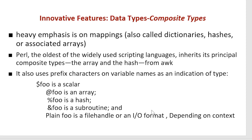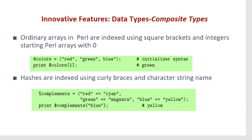In Perl, prefixes indicate the type of variable. The dollar sign means it's a scalar, the at-sign means it's an array, the percentage sign means it's a hash, and the ampersand means it's a subroutine. These six prefix types indicate what kind of variable is being used.